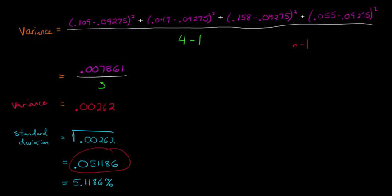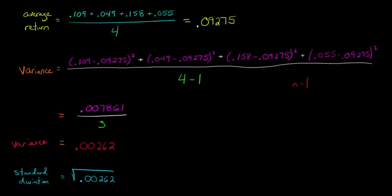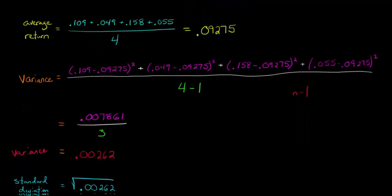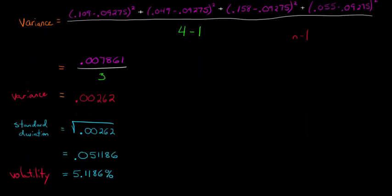And we can convert that to a percentage, 5.1186%. This is our volatility, which is the same thing as our standard deviation. So if somebody said, for the period, what are we looking at here, 2004 to 2007. This is right before the big crash in 2008, so things were still looking pretty good. So for this period in time, the volatility of the S&P 500 was 5.1186%.